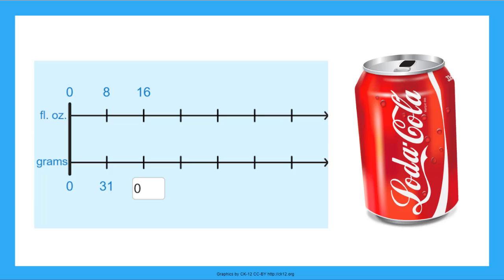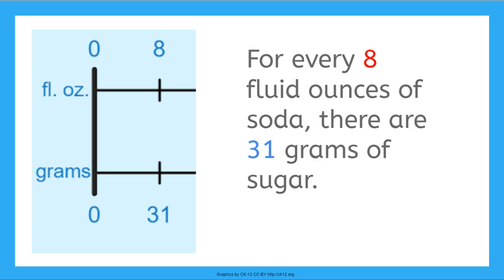We are comparing how much sugar is in cans of soda. For the double number line, can you determine how much sugar is in eight fluid ounces of soda? Imagine we draw an imaginary line down from the eight ounce tick mark and we find a tick mark for 31 grams of sugar. So we can say for every eight fluid ounces of soda, there are 31 grams of sugar.